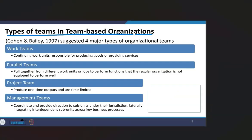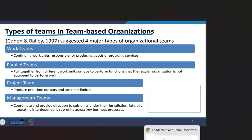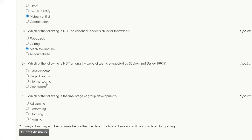Types of teams in a team-based organization include: work team (a continuing work unit responsible for producing goods or providing services), parallel team (pulled together from different work units to perform functions the regular organization is not equipped to perform well), project team (produces one-time output and is time-limited), and management team (coordinates and provides direction to subunits). Therefore, the correct answer for question number nine is option C: informal team is not a type of team suggested by Cohen and Bailey.